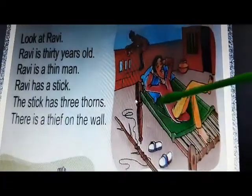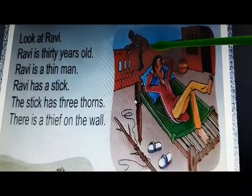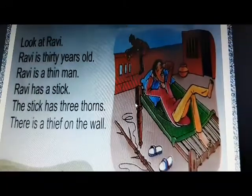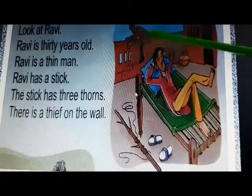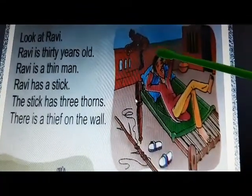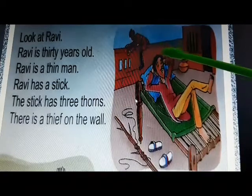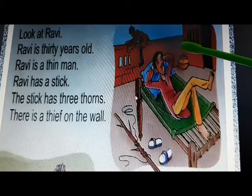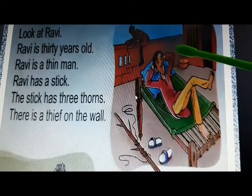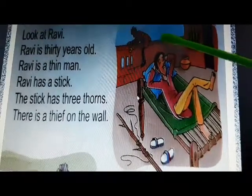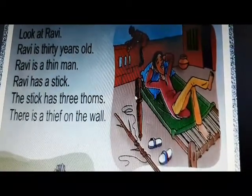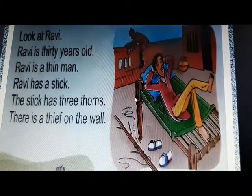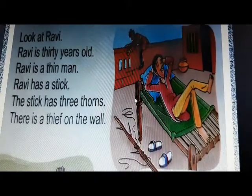Oh, what is happening? Someone is there on the wall. Who is he? Do you know, children, who is he? A man has come — he might want to steal something from the house, from Ravi's house. He is a thief! He wants to steal something and take things from the house. So let's see if Ravi will be able to save himself.